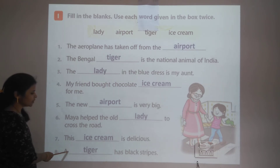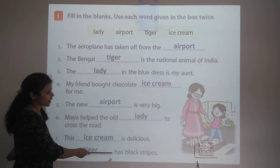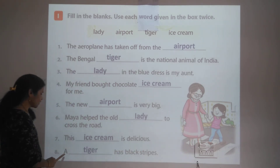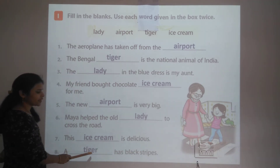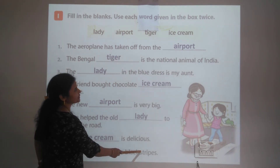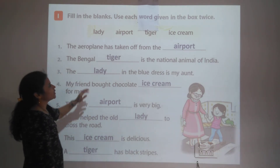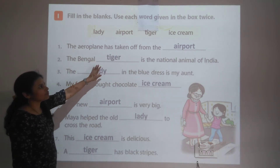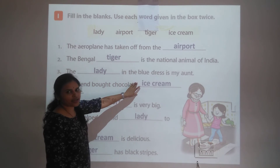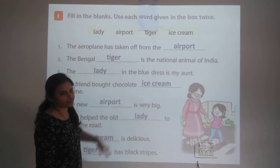Sixth blank: Maya helped the old lady to cross the road — 'lady' is used a second time. Seventh blank: This ice cream is delicious — 'ice cream' used again. Eighth blank: A tiger has black stripes — 'tiger' used again. All the words filling these blanks are nouns.